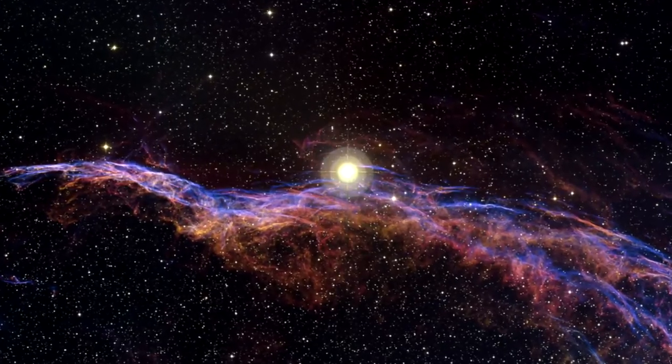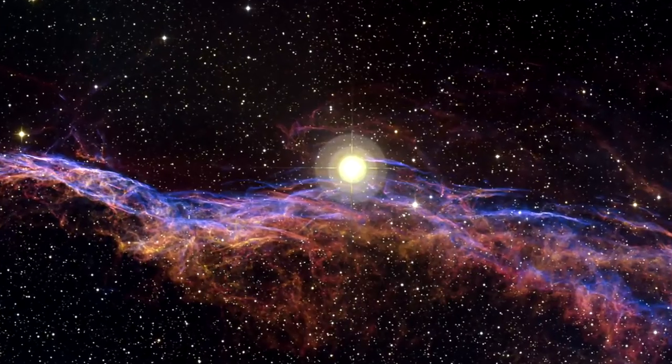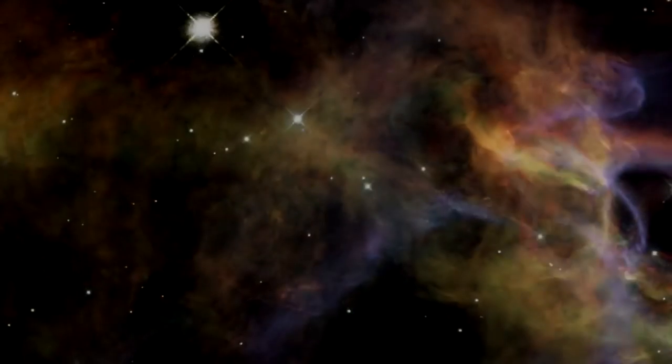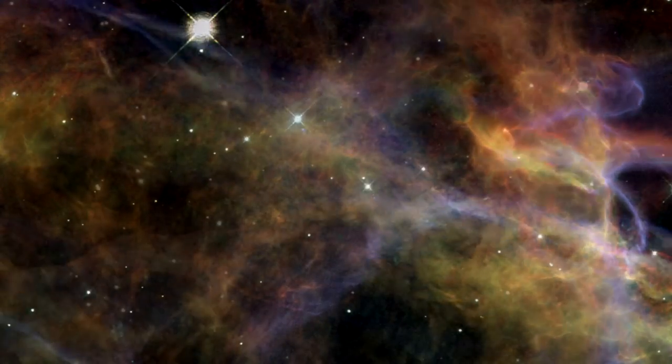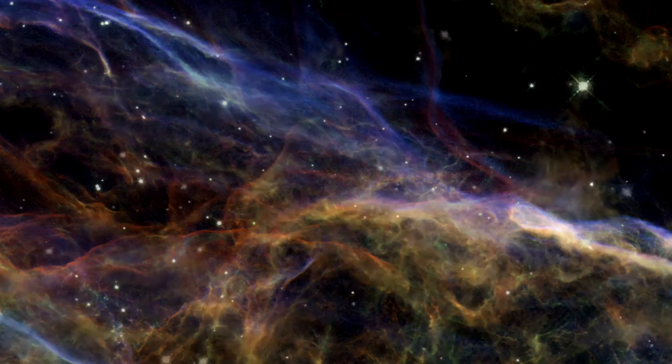The NASA ESA Hubble Space Telescope has recently revealed magnificent sections of the Veil Nebula, the shattered remains of a supernova that exploded some 5,000 to 10,000 years ago. The new Hubble images provide beautiful views of the delicate, wispy structure resulting from this cosmic cataclysm.